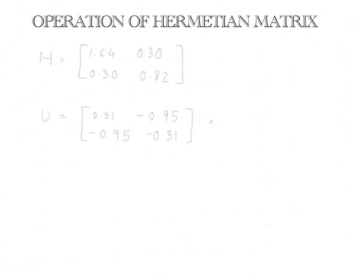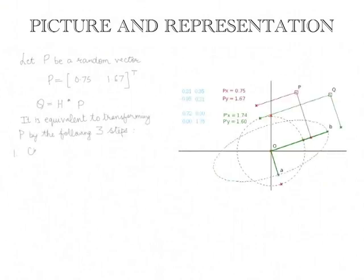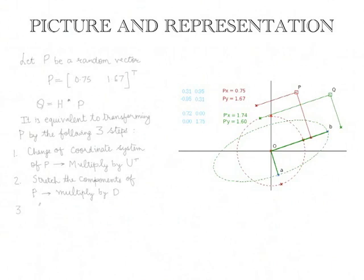To show the operation, consider a Hermitian matrix H and diagonalize it in the form as UDU transpose. Now to show the graphical representation of this transformation, let us take a random vector P. Multiplying by the Hermitian matrix is equivalent to transforming P by the following three steps. First, the coordinate system is changed by multiplication with U transpose. Then each of the components of P gets stretched by multiplication with D. Finally, the coordinate system is changed back to the original form upon multiplication with U.